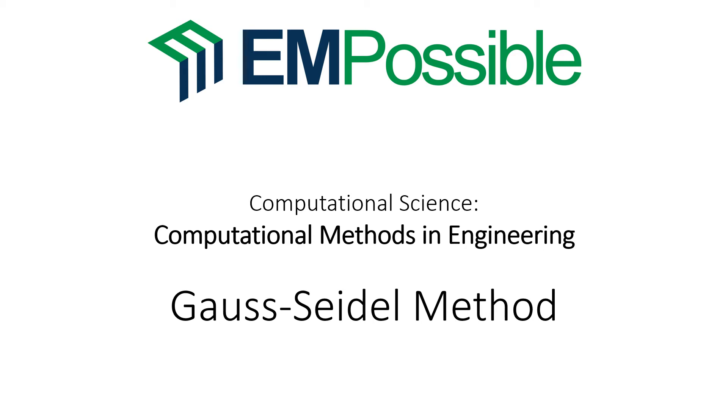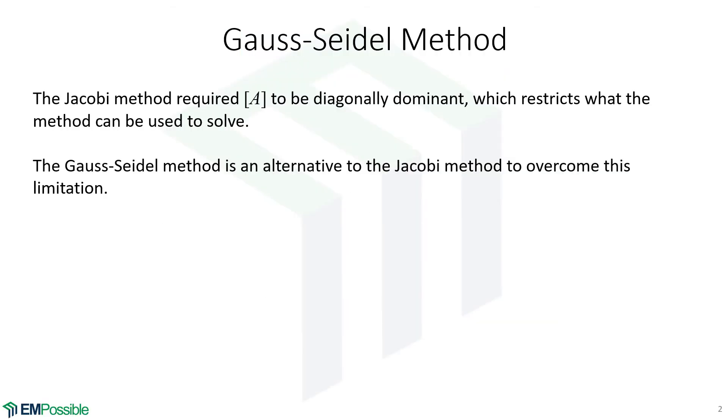The Gauss-Seidel method. Remember with the Jacobi iteration method, the matrix A had to be diagonally dominant. Clearly this restricts the number of problems that we can solve. What do we do if it's not diagonally dominant? The Gauss-Seidel method is an alternative to the Jacobi iteration method that overcomes the limitation of having to be diagonally dominant.